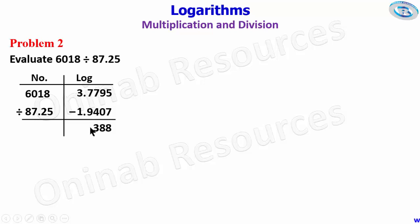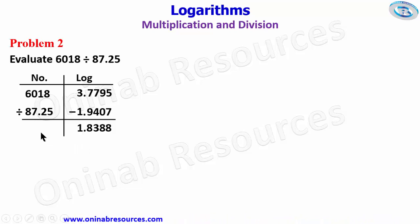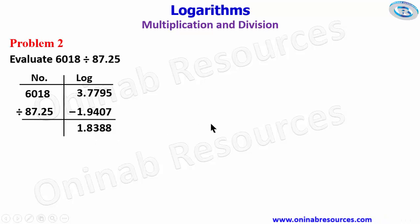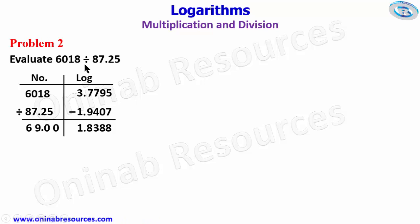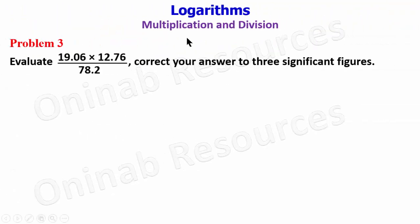We place our point and get 2 minus 1 gives 1, so we have the result of the subtraction. We now find the antilogarithm: keeping the integer part, we go to the antilogarithm table — 83 under 8, differences of 8, gives 6900. Adding 1 to the integer part 1 gives 2. We count 2 digits and place the decimal point. That's the solution to 6018 divided by 87.25, and we go to Problem 3.